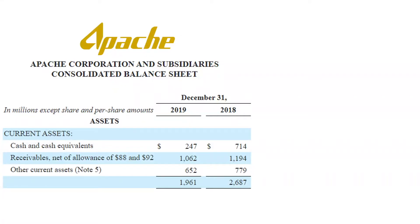The example company we're going to use is Apache Corporation, which is an oil and gas company. Here's an excerpt of their balance sheet in millions — just the current asset section. The receivables line says 'net of allowance of 88 and 92.' The 1062 is the amount Apache expects to collect from customers as of December 31st, 2019. The 88 is the amount owed to Apache that they do not expect to collect — those customers are expected to default. The 88 applies to the first column and the 92 to the second column.